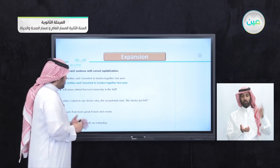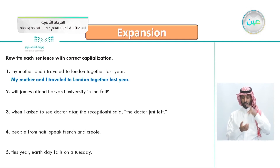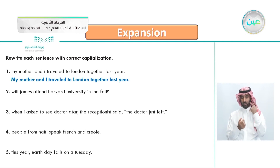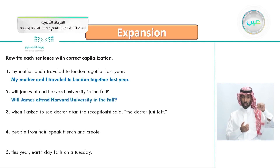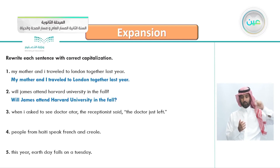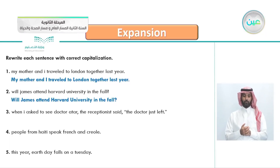Number two: 'will james attend harvard university in the fall?' The correction: capital W for 'Will,' capital J for 'James,' capital H and U for 'Harvard University,' and 'fall' with a small F — don't capitalize the names of seasons.